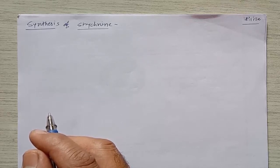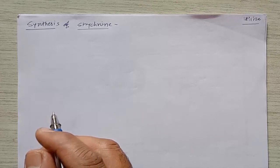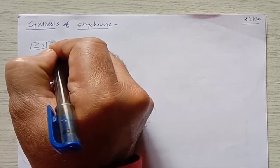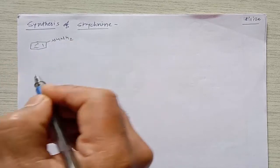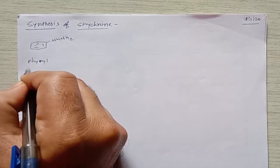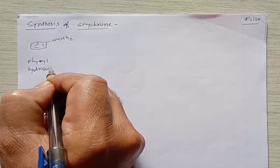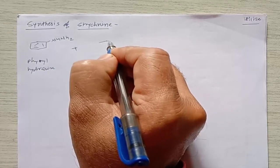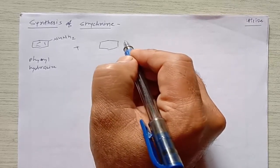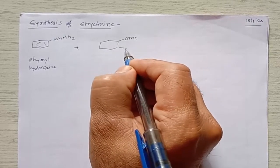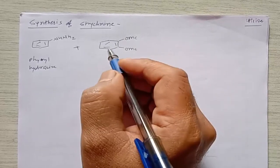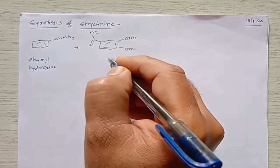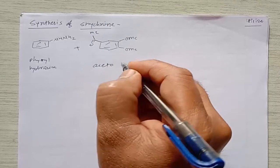We can start the synthesis from phenyl hydrazine as well as acetoviratron. The structure of phenyl hydrazine contains NH2, and from this phenyl hydrazine as well as acetoviratron we can start the synthesis of strychnine. In acetoviratron, the molecule contains an aromatic benzene ring, two methoxy groups, and one ketonic group — that is a methyl group — so it is called acetoviratron.